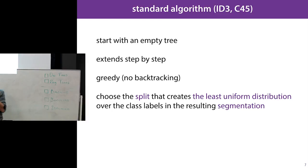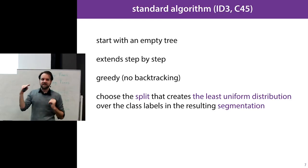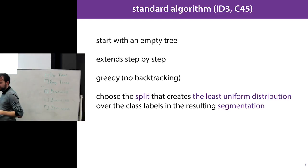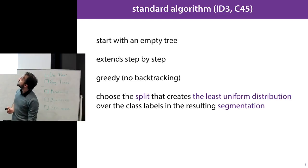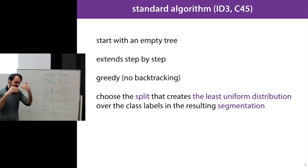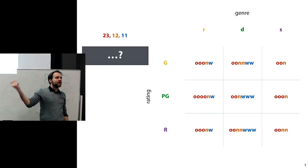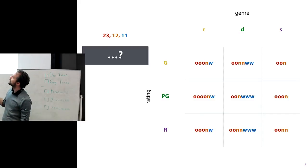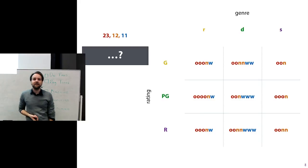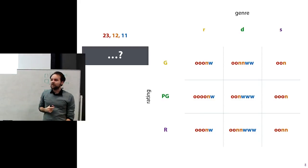We look for the split that creates the least uniform distribution — the biggest separation in class distribution among the instances reaching that part of the tree. Starting at the root, the overall class distribution is 23, 12, 11 across the whole dataset. If we split on rating, we get three groups with distributions roughly 7-4-3, 9-3-4, and 7-5-4. Despite the numbers changing, the proportions are roughly the same as before the split.